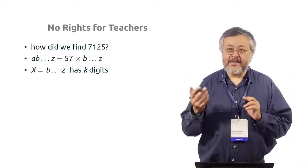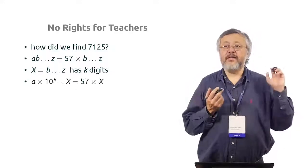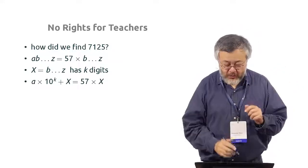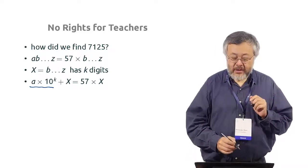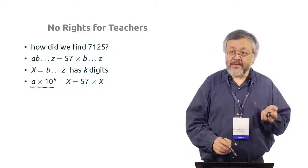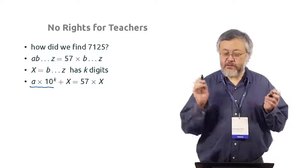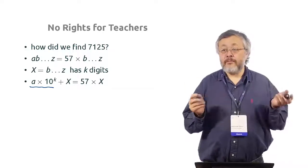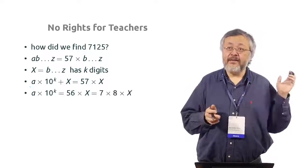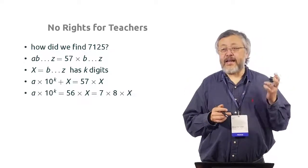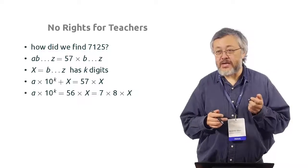So we assume that x has k digits. And we write this equation. This is a shifted to the k places to the left. And then we add x and get 57 times x as we should. Now it's a better equation because we can move x to the right-hand side. And I get that a times 10 to the k is 56 times x.